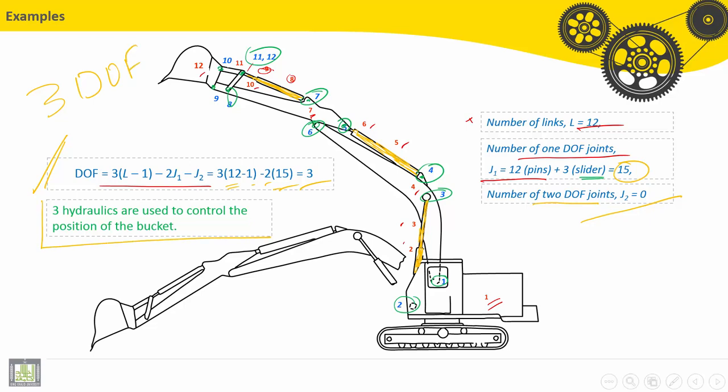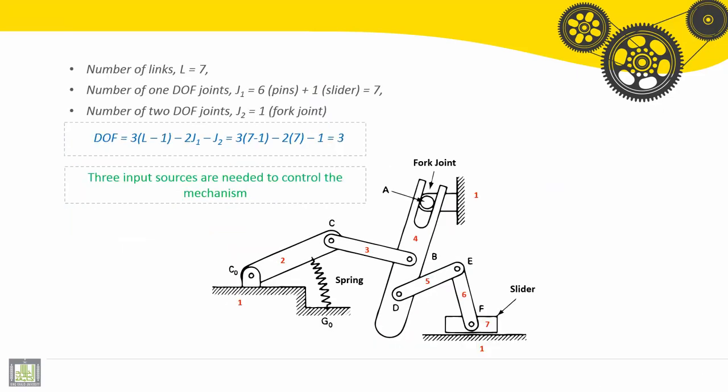So three hydraulics, I mean pistons, are used to control the position of the bucket. Let's take another example.